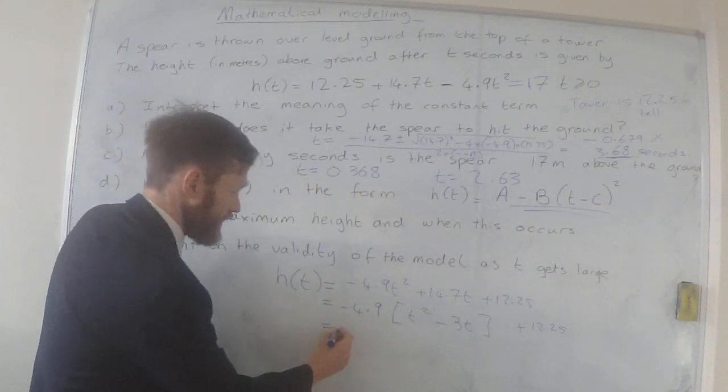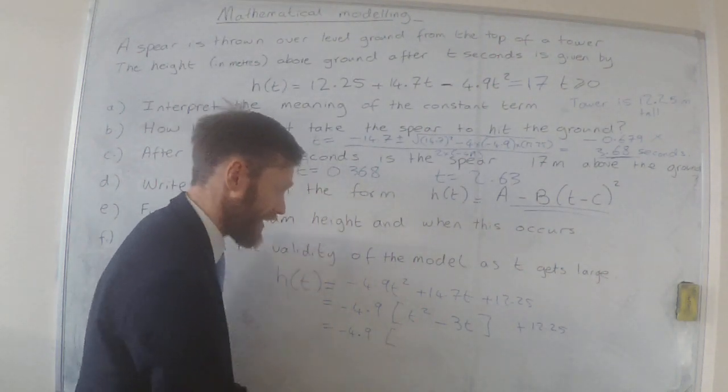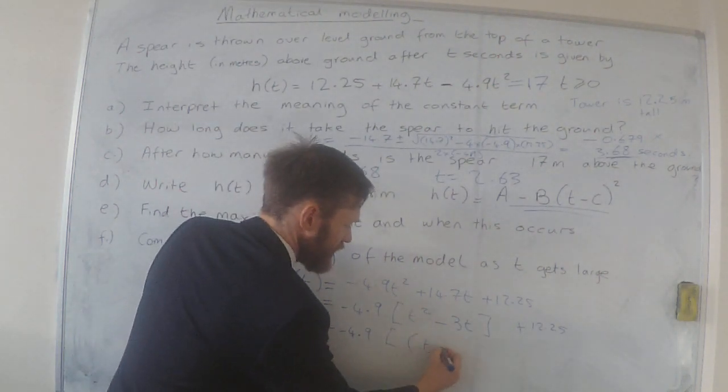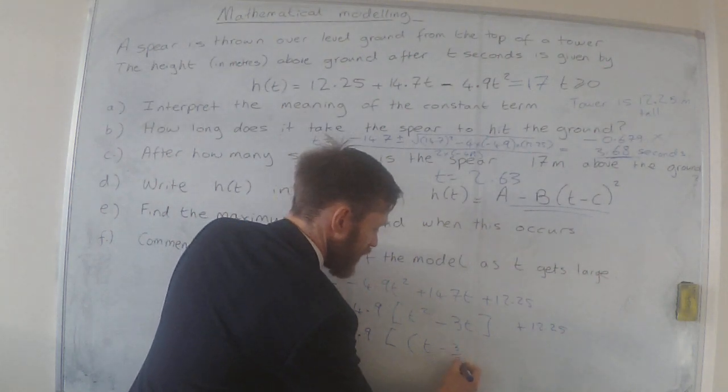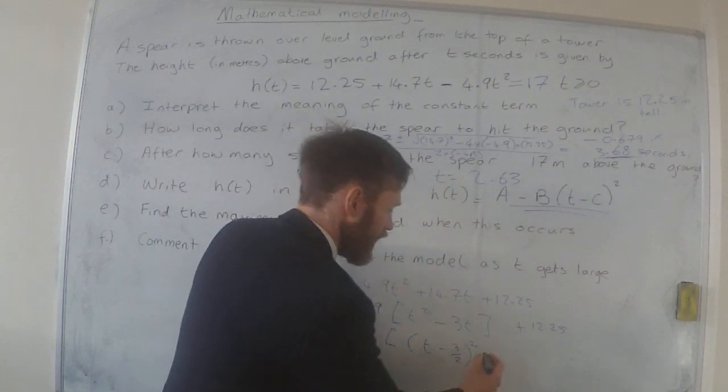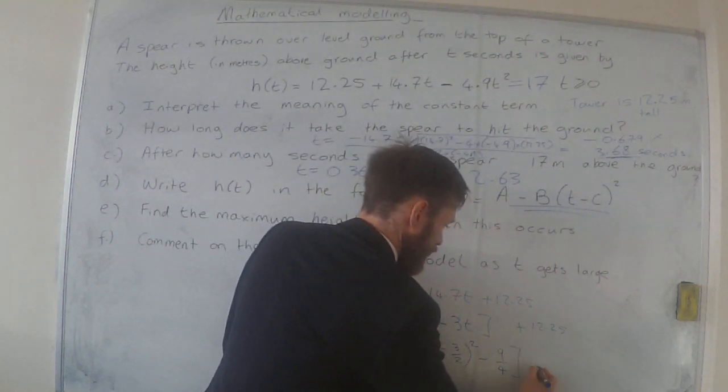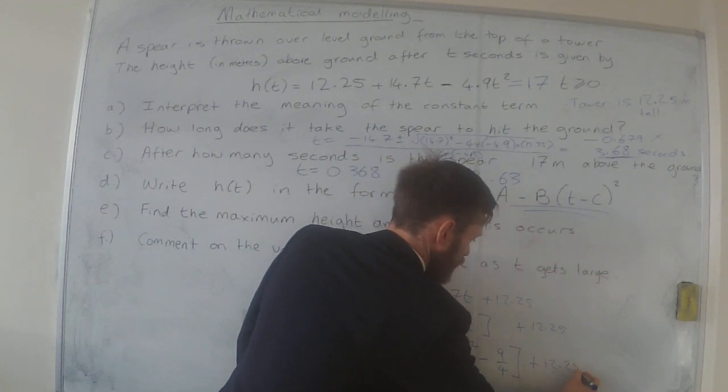Now we can do the completing the square on what's inside this square bracket. So I would have (t - 3/2)² - 9/4, all squared, plus 12.25.